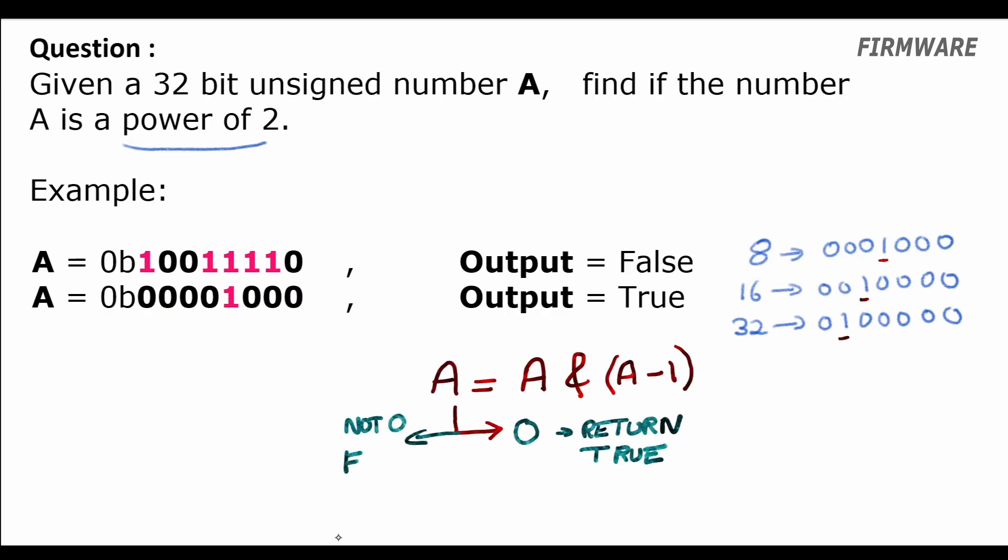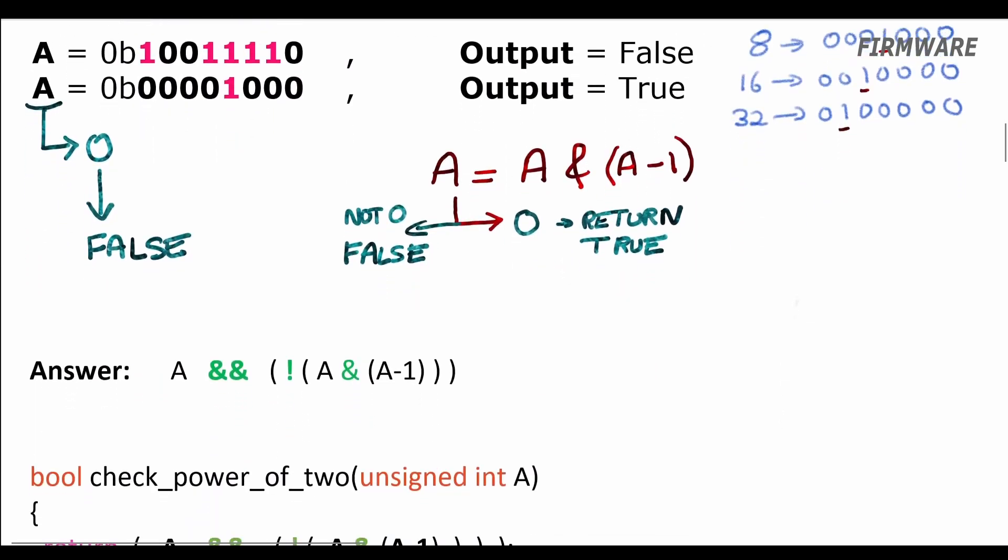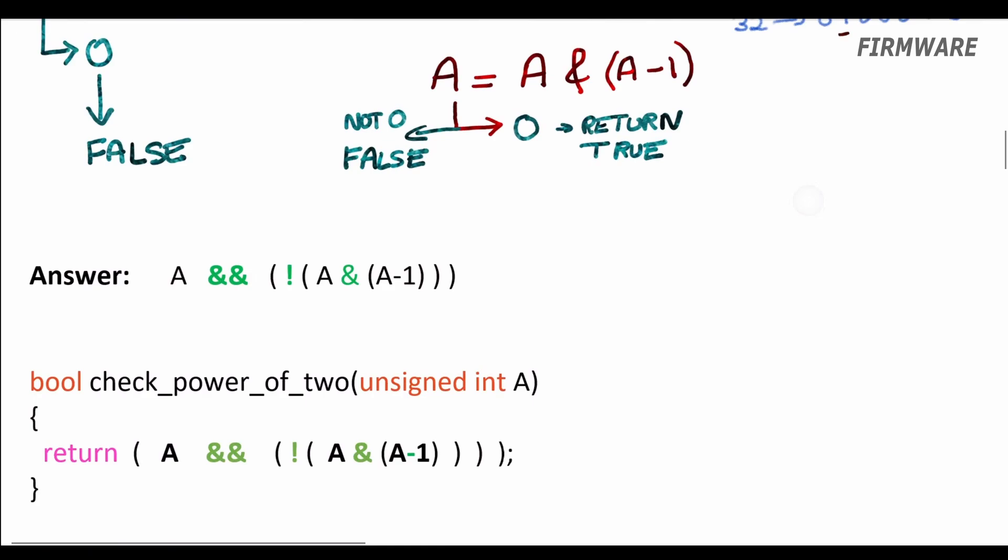But we have one corner case where A as an input could be 0, which needs to be handled. So in case A is 0, we need to return false—that is, the number is not a power of 2. Therefore our result will be A logical and with logical not of A and A minus 1.